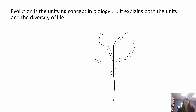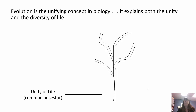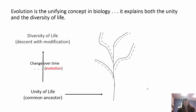Evolution is the unifying concept in biology, and it explains both the unity and the diversity of life. We have unity because there's a common ancestor. Change over time is evolution — descent with modification — and modifications lead to diversity. The past is our unity; the present is the diversity.